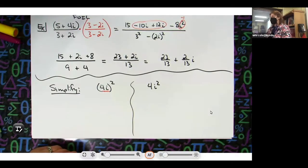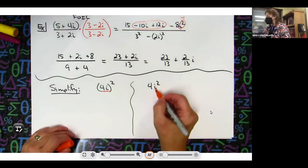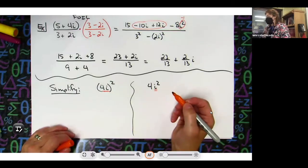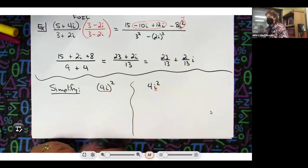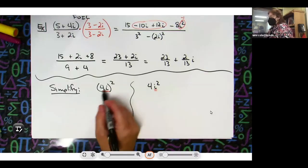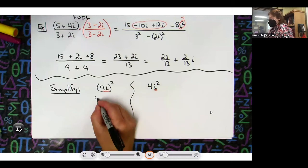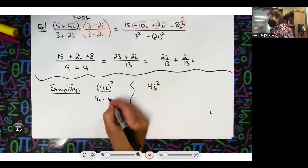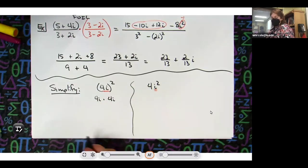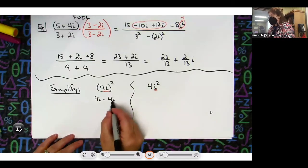If you need to see this you could write 4i times 4i, because it's your base being squared. 4 times 4 is 16 and then i times i is i squared, so really I've got a 16i squared at that point. i squared is negative 1, so then the overall answer is negative 16.